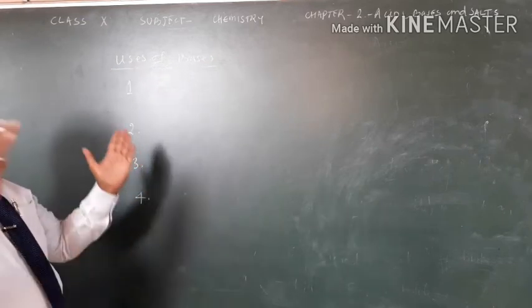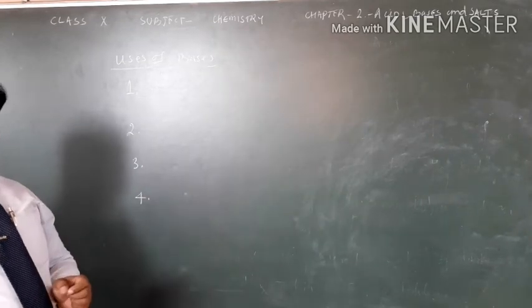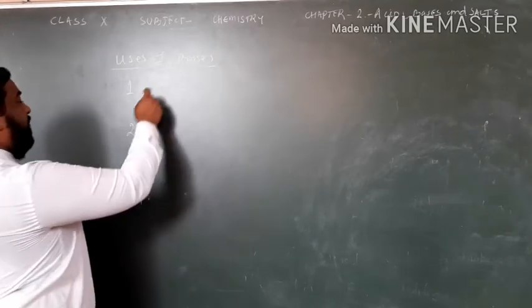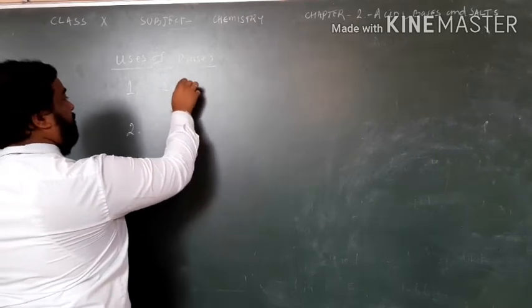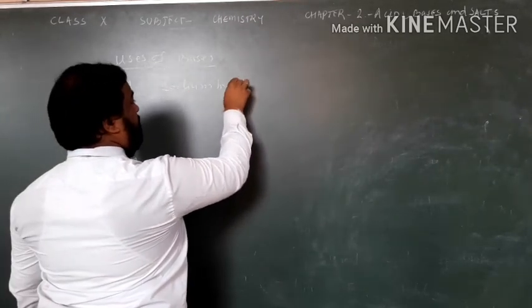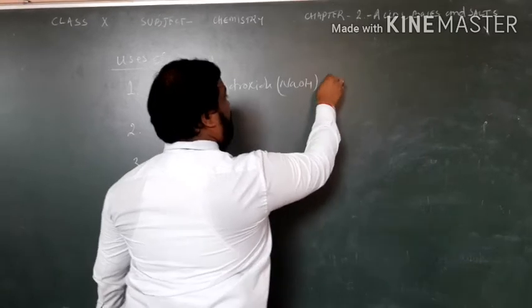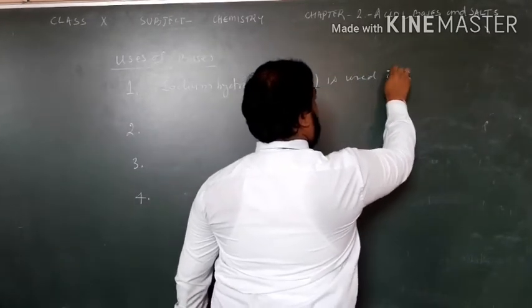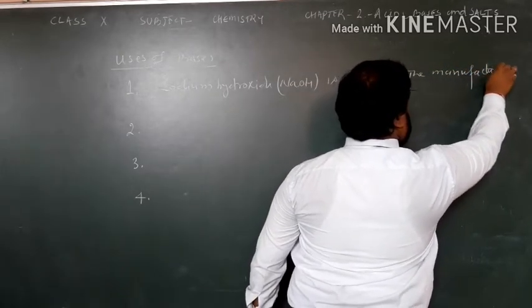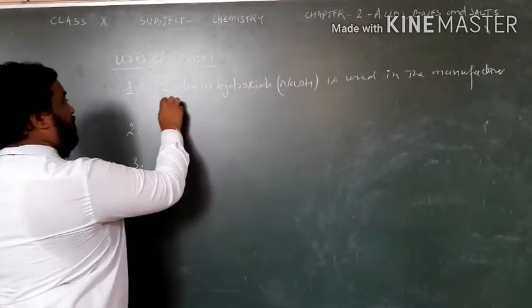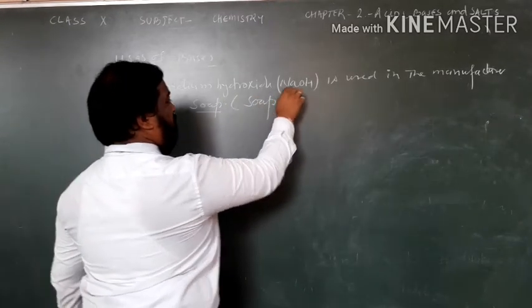Second, usage of bases. Like acids, bases are also used in different kinds of manufacturing of chemicals. Sodium Hydroxide, NaOH, is used in the manufacture of soap.